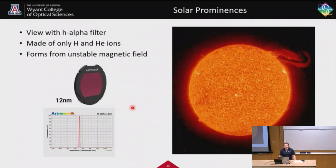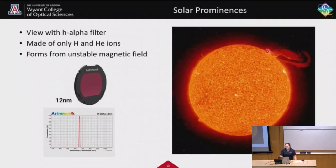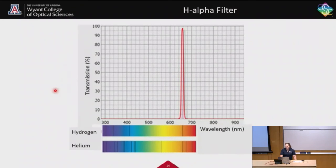Another way to observe the sun is with an H-alpha filter, which has a narrow spike of transmission — blocking blue light but letting through a very narrow bandwidth of red — allowing us to see the emission spectra of hydrogen and helium ions. This is how we observe solar prominences, which are explosions made up of helium and hydrogen ions. The transmission spectrum of the H-alpha filter shows two lines from the hydrogen and helium spectrum that overlap with the transmitted band, enabling us to see the prominences.